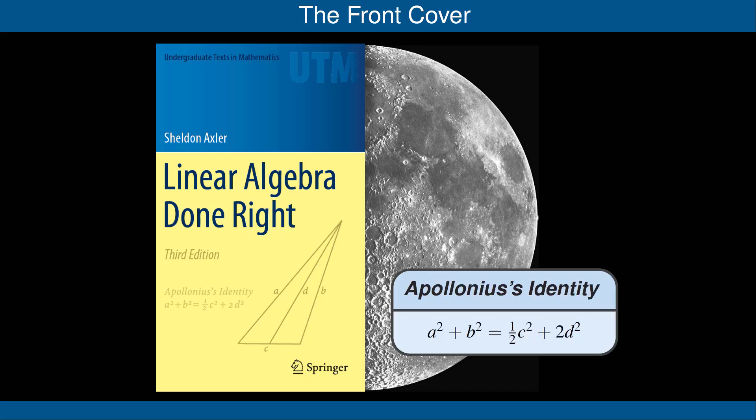Apollonius' identity states that a squared plus b squared equals one-half times c squared plus two times d squared. The proof using just Euclidean geometry, as discovered by Apollonius, requires a bit of cleverness. I put Apollonius' identity on the front cover of the book because the inner product tools that we will develop in Chapter 6 reduce the proof of Apollonius' identity to a straightforward calculation.